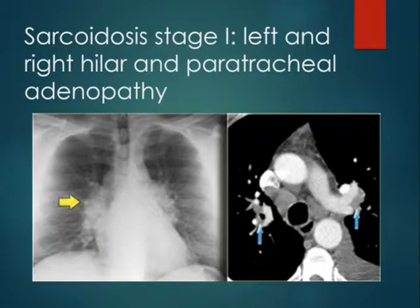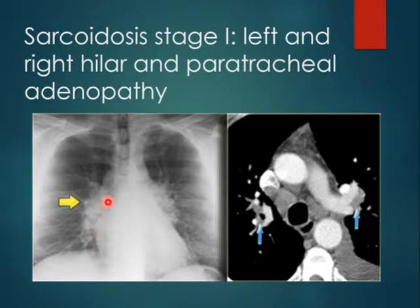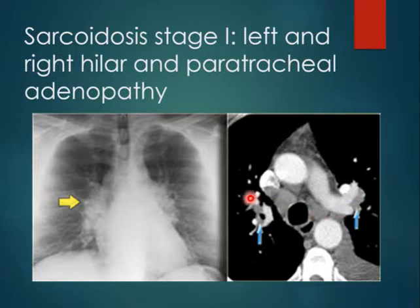In Stage 1, the chest X-ray shows bilateral, symmetrical hilar lymph node enlargement and the lungs are clear — nothing in the lung, indicating Stage 1 sarcoidosis. On CT scan, you can see the hilar lymphadenopathy bilaterally, and in the lung window the lung is not involved.